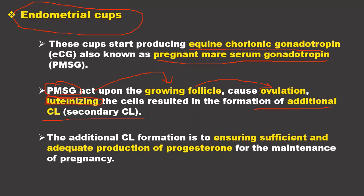Why is the additional corpus luteum necessary? It is not entirely known, because the mare already has a primary corpus luteum at the time of ovulation. It is believed that the additional corpus luteum is necessary to ensure sufficient and adequate production of progesterone for the maintenance of pregnancy. Progesterone is known as the hormone of pregnancy, and this mechanism ensures sufficient supply for early pregnancy establishment.